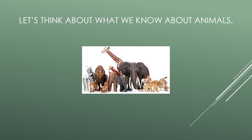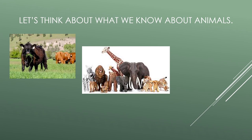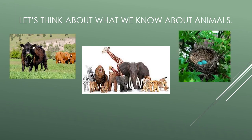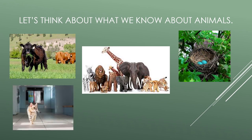Now let's think about what we know about animals. Take a look at this picture. What do you see happening in this picture? Tell somebody in your family about this picture. Did you talk about how the cow is eating the grass in this picture? I really think that the grass is important to the cow in order to survive. What about this picture? Do you notice that there is a nest in a tree and there are two eggs in the nest?